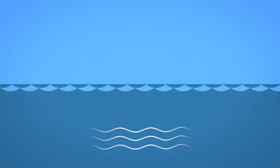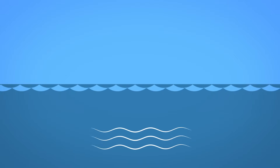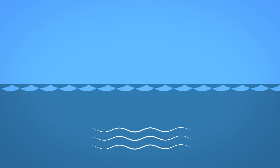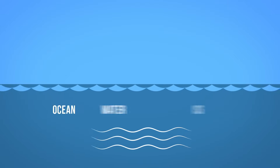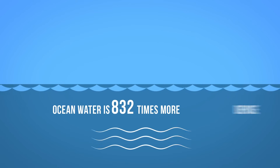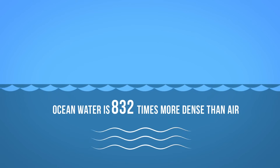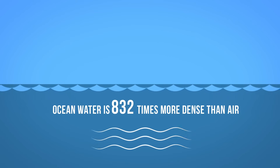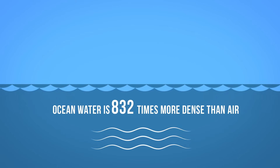Ocean currents generate relatively more energy than air currents because ocean water is 832 times more dense than air, and therefore applies greater force on the turbines.